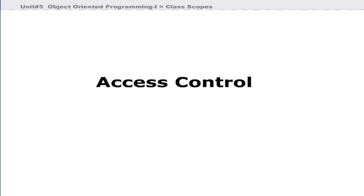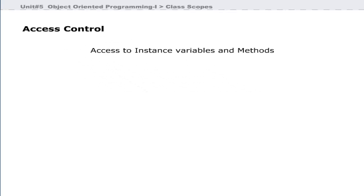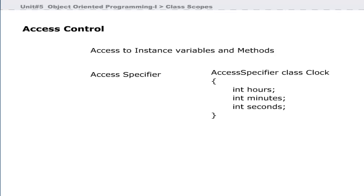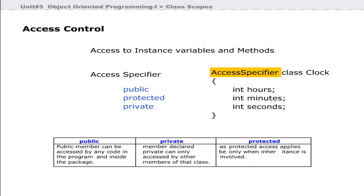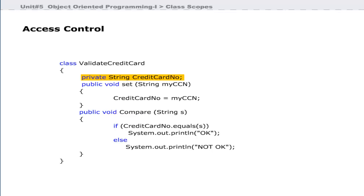Access controls are used to control the access to instance variables and methods of a class. Java uses access specifiers in the declaration part to allow access of a member. There are three access specifiers in Java: public, private, and protected. This table summarizes the three access specifiers.